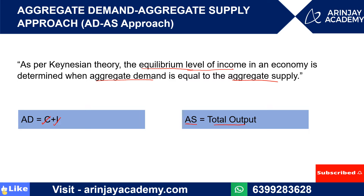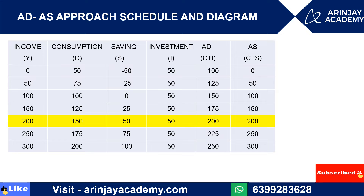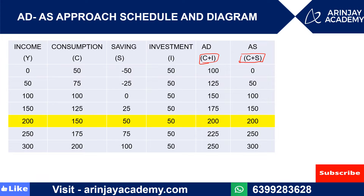Let's look at the schedule. We have income, consumption, savings, investment, then AD and AS. AD is basically the sum total of consumption plus investment, and AS is the sum total of consumption plus savings, or we can say AS is the total output.